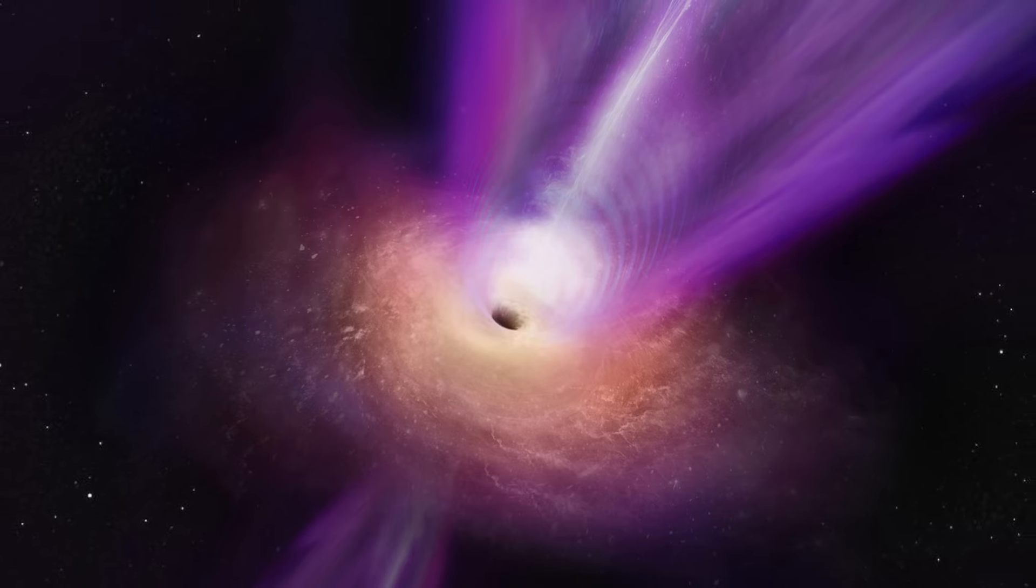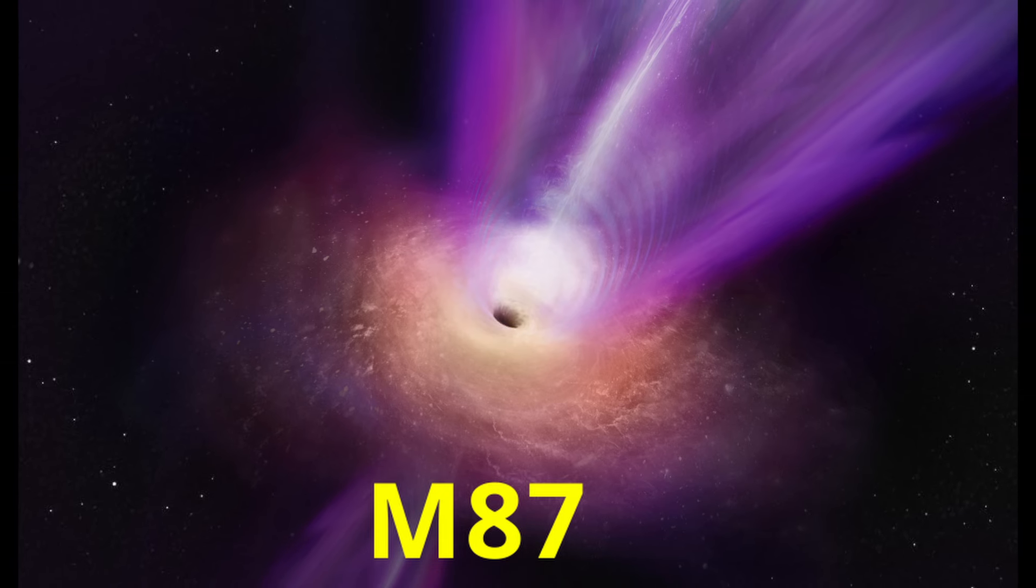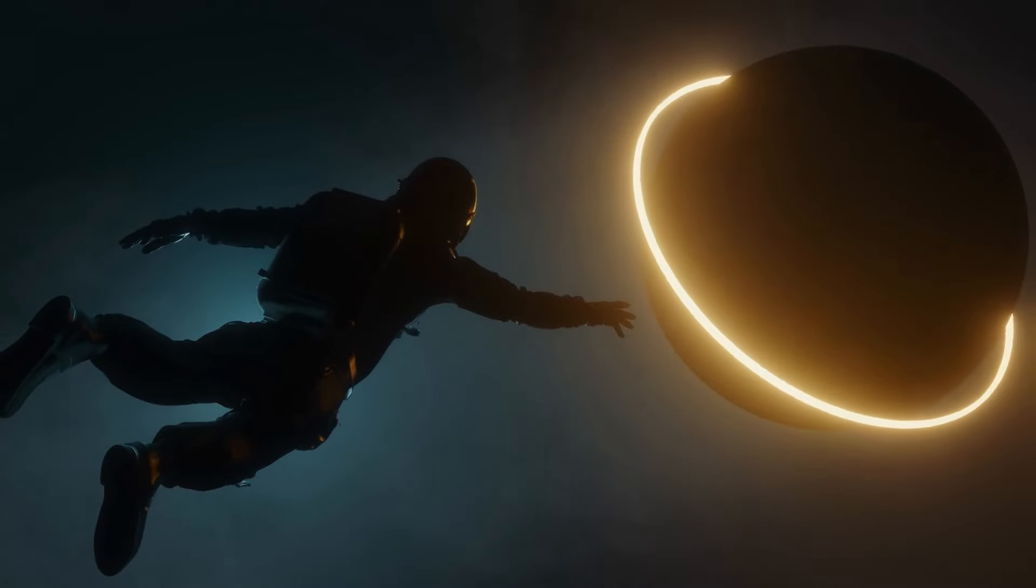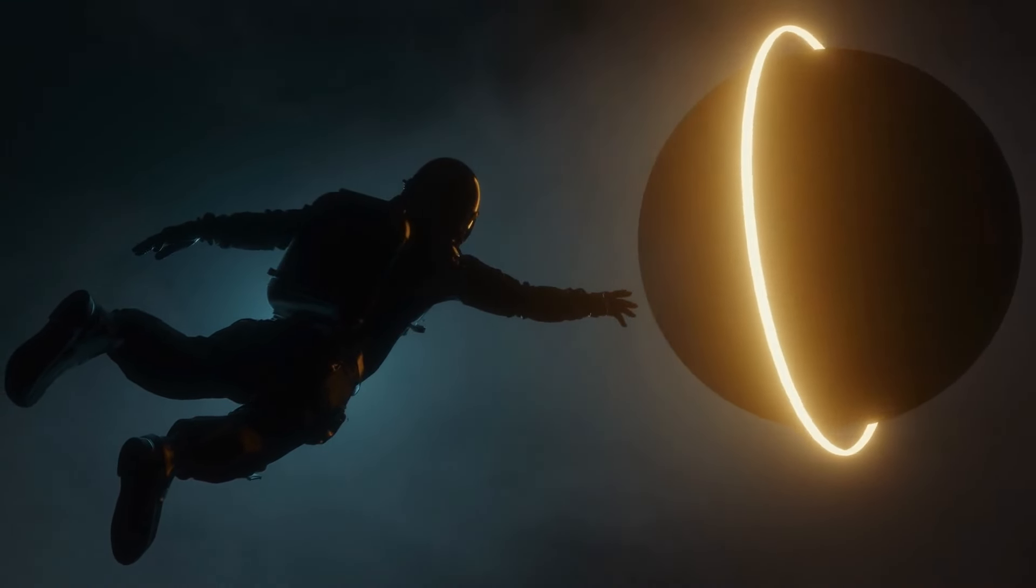Some galaxies, like M87, have black holes ejecting jets that extend thousands of light years into space. If you crossed the event horizon of a black hole, you would never be able to communicate back. That's some real ghosting.